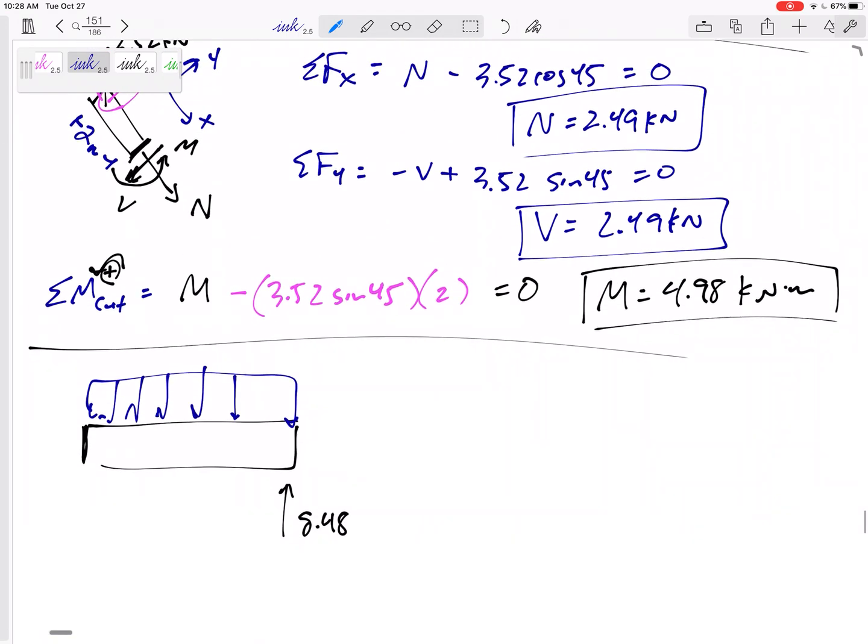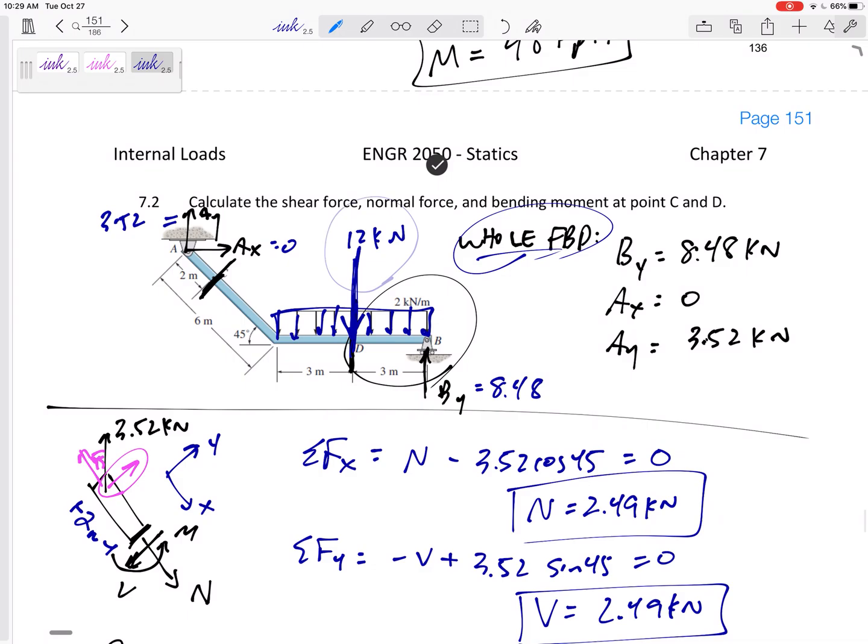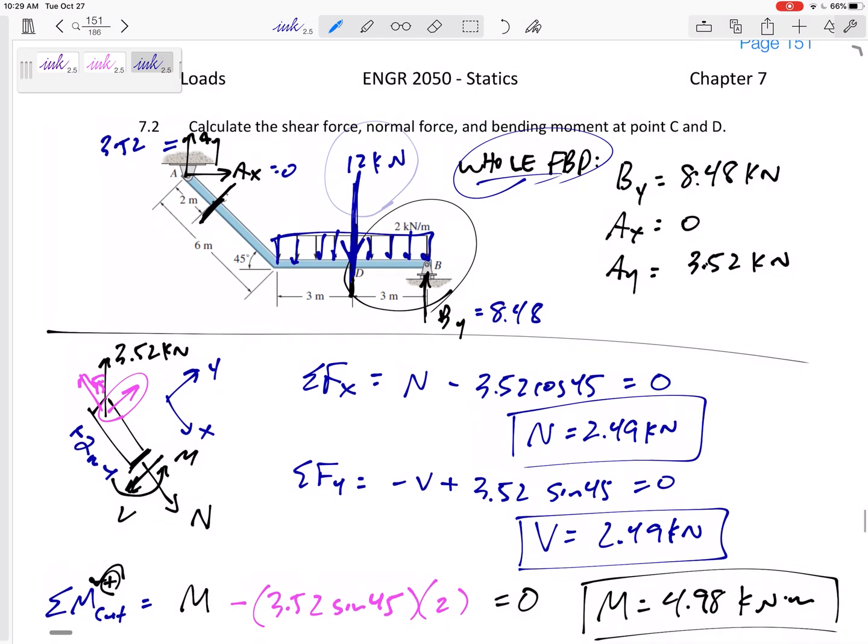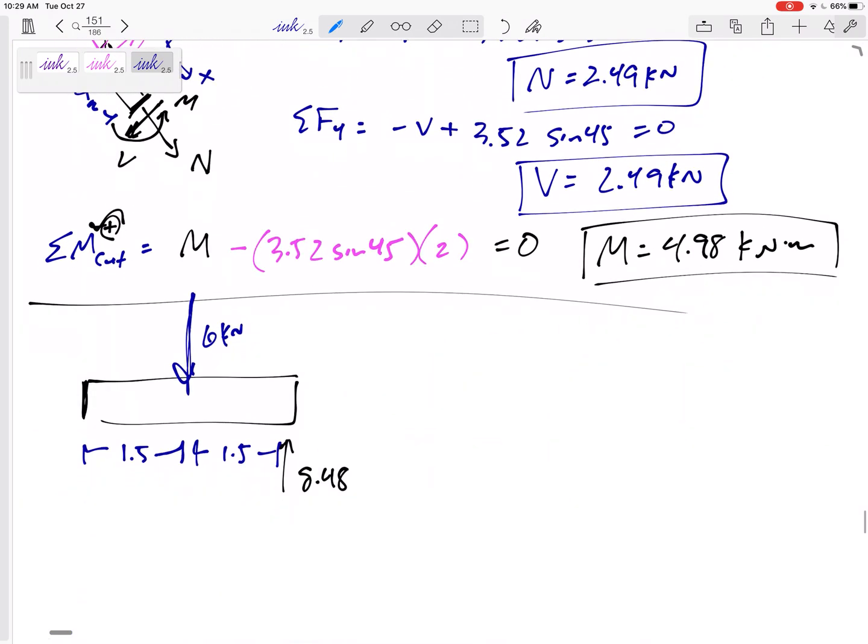I need to look at just this part of the distributed load and act like that's by itself. So this would be six kilonewtons at 1.5, 1.5. I replaced this rectangular distributed load. The only part that I could see of it. So anyway, redo that distributed load. Don't try to place a 12 right at the cut or something like that.